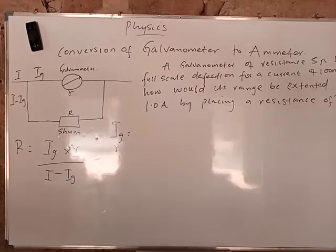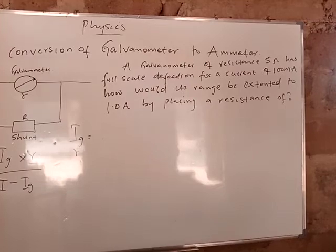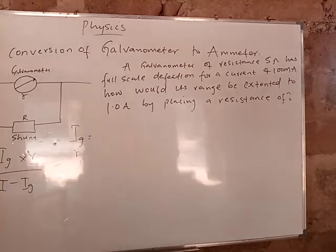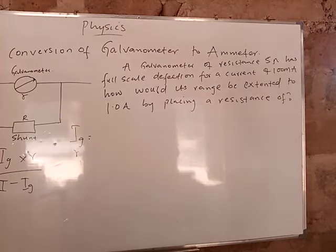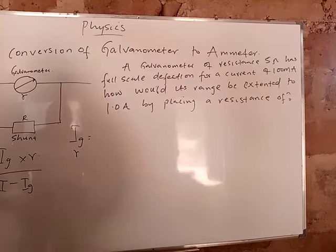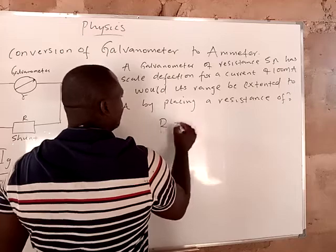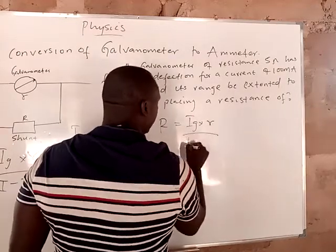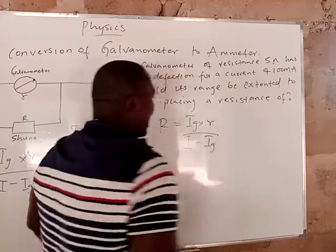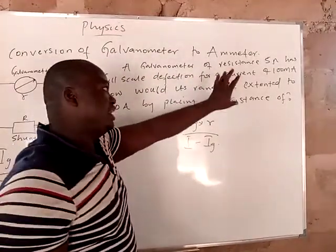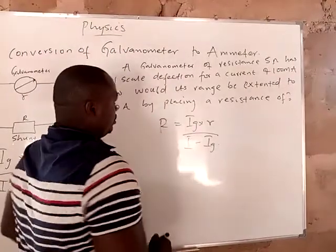Now, we have a very simple question. A galvanometer of resistance 5 ohms has a full scale deflection for a current of 100 milliamperes. How would its range be extended to 1 ampere by placing a resistance? First of all, they want you to calculate R, the resistance of the shunt. Your formula is R equals IG times r, all over I minus IG.